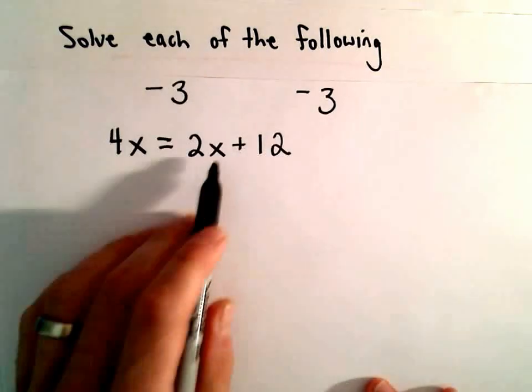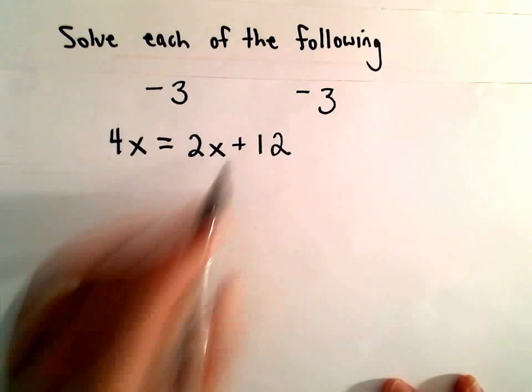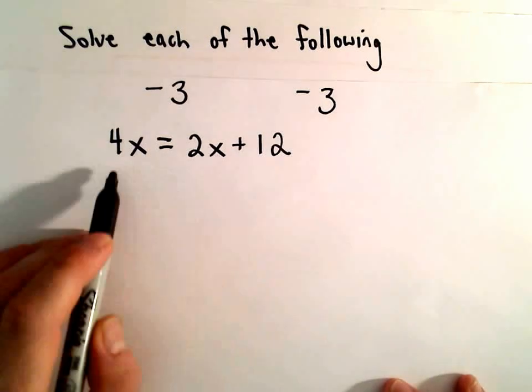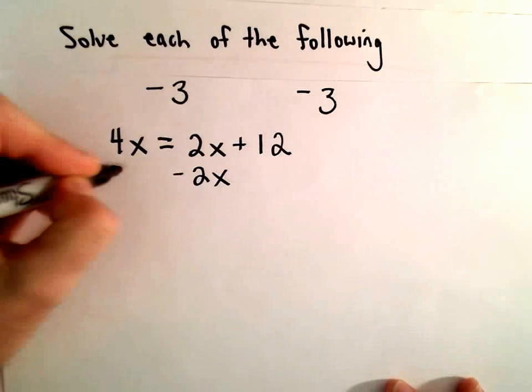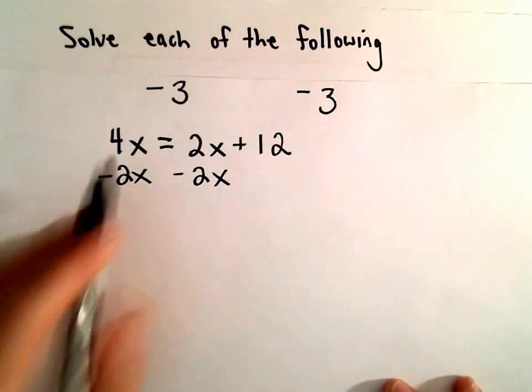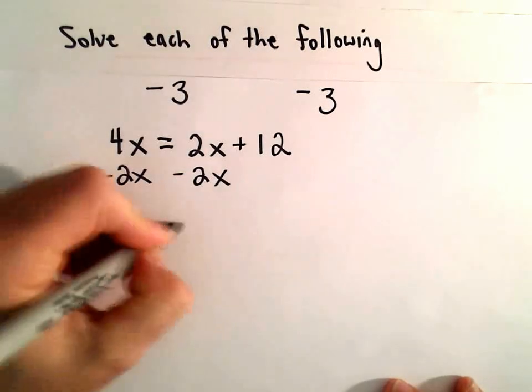So the next thing I'm going to do is put all my variables on the left side. Since I have a positive 2x, to move that over to the left side, I'm going to subtract 2x from both sides. I would have like terms. 4x minus 2x would be 2x.